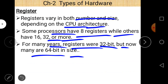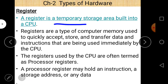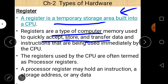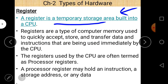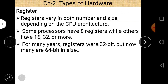Some important points to remember: first, a register is a temporary storage area built into a CPU — it is a part of the CPU, which is a very important point asked in examinations. Registers are used to quickly accept, store, and transfer data and instructions used immediately by the CPU. Registers are the fastest memory in a computer system.